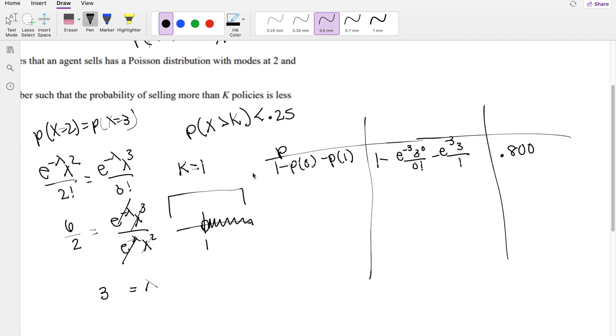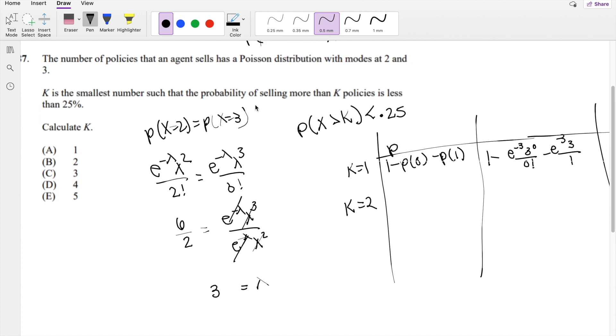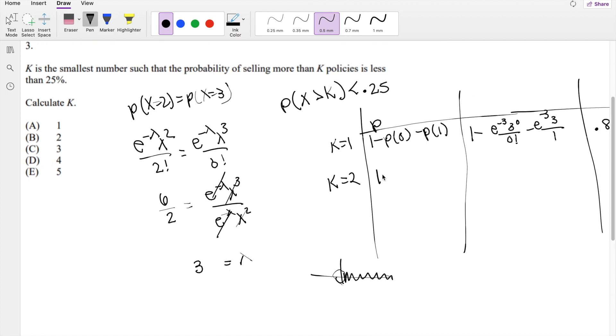So what if k equals 2? We can rephrase this as: what is the smallest number such that the probability of selling more than 2 policies is less than 0.25? The probability of selling more than 2 is 1 minus P(0) minus P(1) minus P(2).